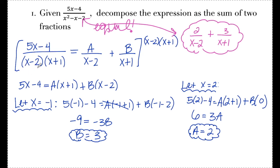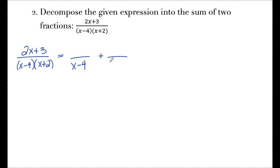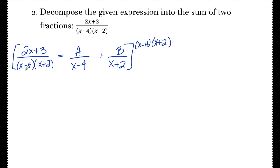Let's look at one more example with two distinct linear factors. Decompose 2x plus 3 over x minus 4 times x plus 2 into the sum of two fractions. The denominator is already factored, giving two distinct linear factors: x minus 4 and x plus 2. I set up a over x minus 4 plus b over x plus 2, then clear denominators by multiplying by x minus 4 times x plus 2. This leaves 2x plus 3 on the left, a times (x plus 2) in the second term, and b times (x minus 4) in the last term.